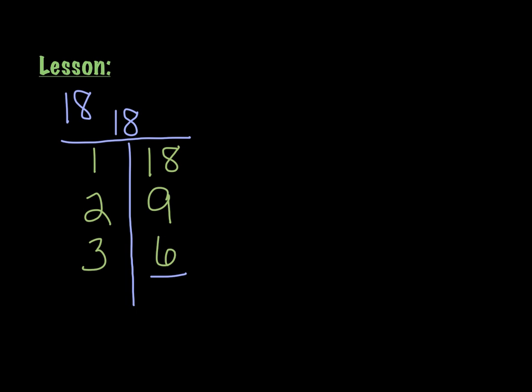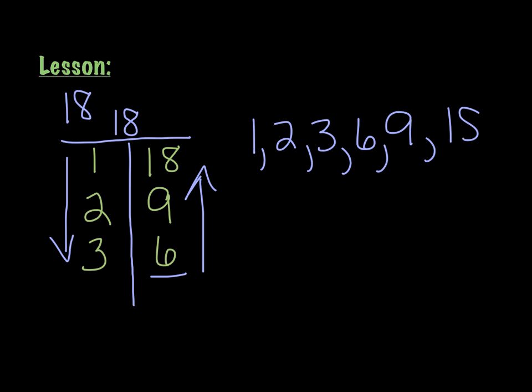So if you were asked to list those factor pairs in order, you could start with a t-chart like I've done here. And then you could list them going down this side and then back up this side. So I would list them like this: 1, 2, 3, 6, 9, and 18. So this would be all of the factor pairs for the number 18. So this is one way to do it.